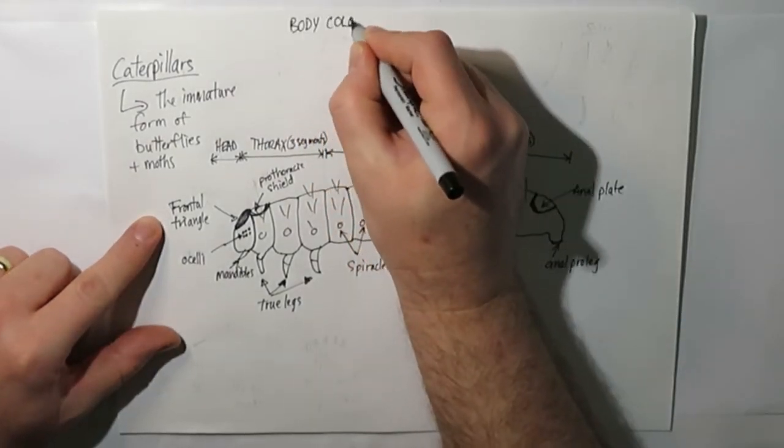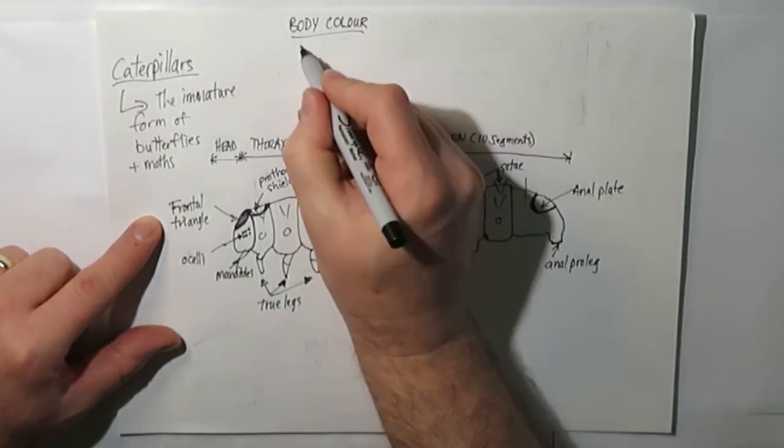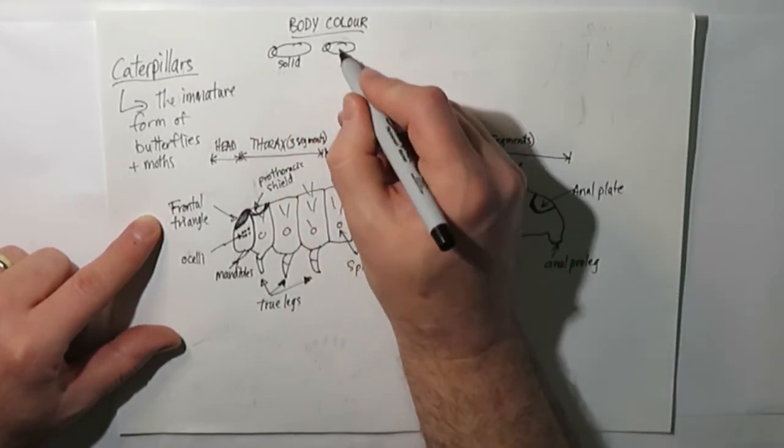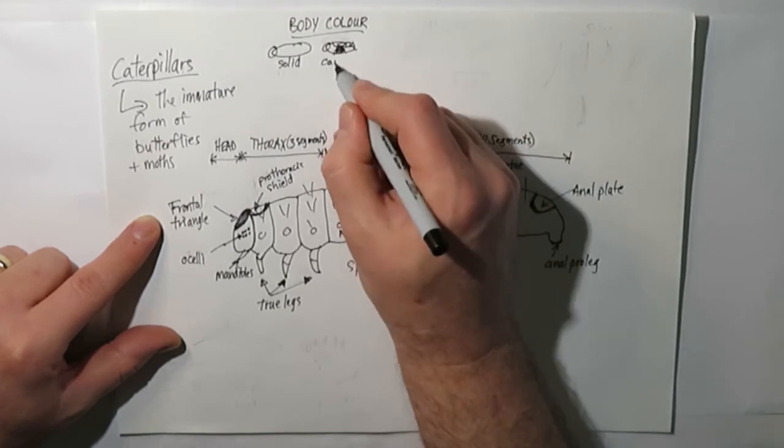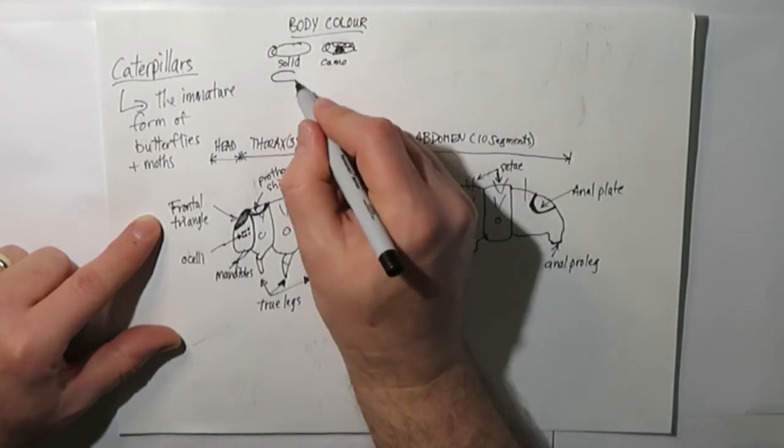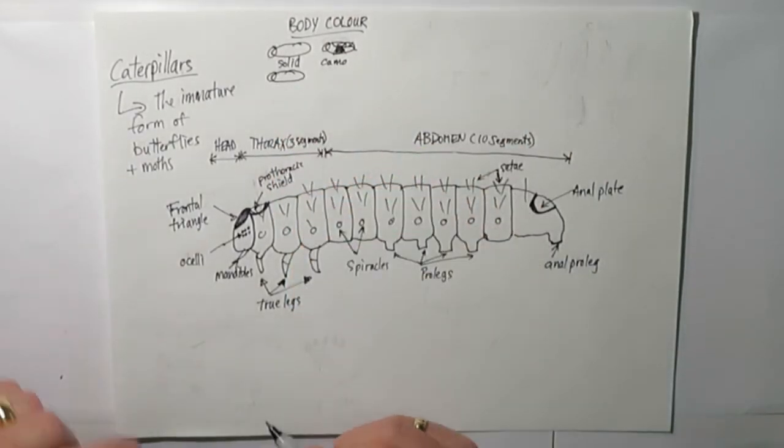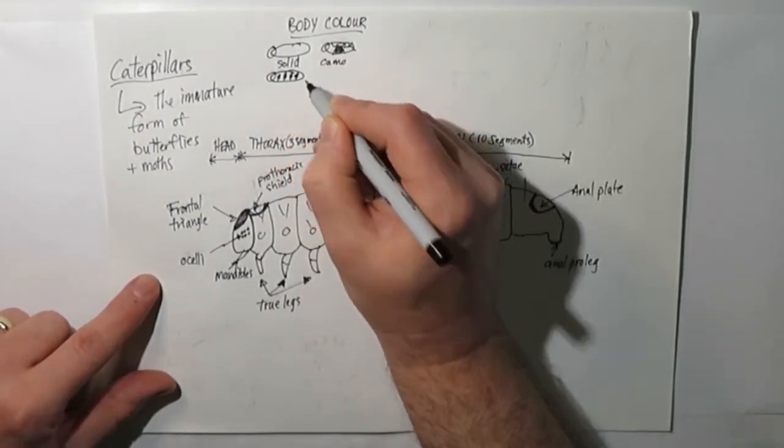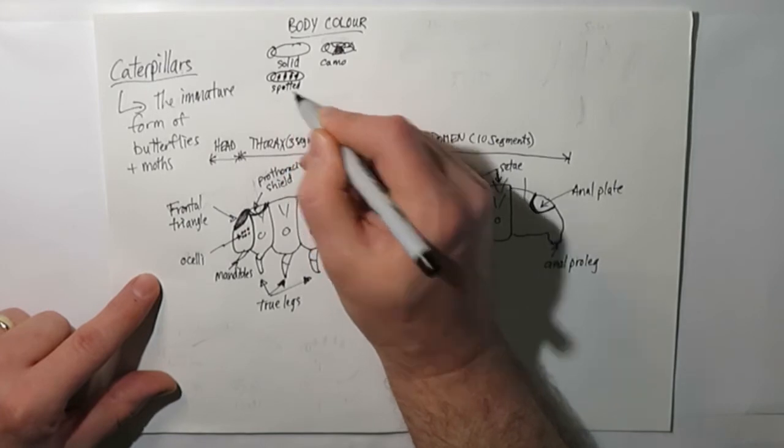When we look at the body we can differentiate caterpillars by their color. They might be a solid color. They might be camouflaged and have different kind of patterned body. They might have spots or blotches.